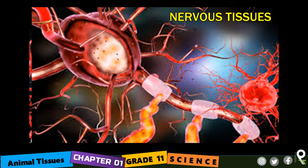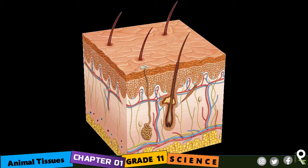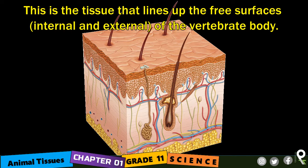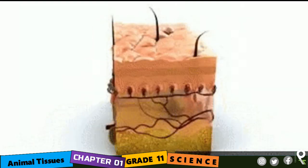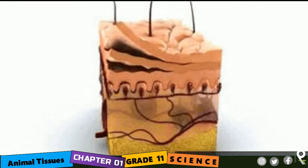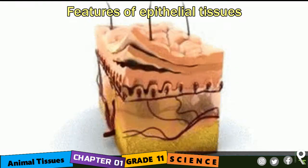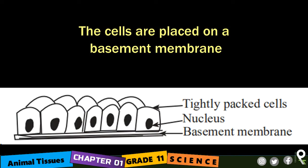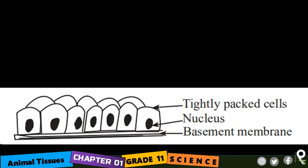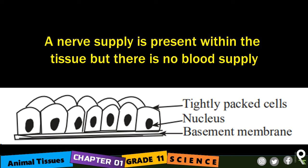We are here to understand the epithelial tissue. This is the tissue that lines up the free surfaces, internal and external, of the vertebrate body. Some of them are composed of a single layer of cells and others have several cell layers. The features of epithelial tissues: the cells are placed on a basement membrane, the cells are tightly packed, and you can find a nucleus in them. A nerve supply is present within the tissue, but there is no blood supply.